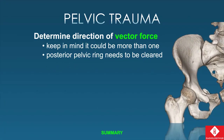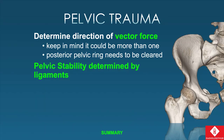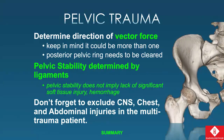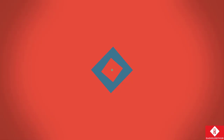In summary: determine the direction of the vector force — keep in mind it could be more than one. Really make sure you're looking at the posterior pelvic ring, because that's going to dictate whether you're dealing with an unstable situation. Remember stability is determined by those ligaments, not necessarily the bone, but you'll see the displacement as a result of those ligaments being involved. Pelvic stability also does not imply a lack of significant soft tissue injury or hemorrhage. If your patient is reduced in a pelvic binder or sheet, you may be looking for more subtle injuries. Don't forget to exclude other major injuries and incorporate pelvic imaging into your whole-body CTs.